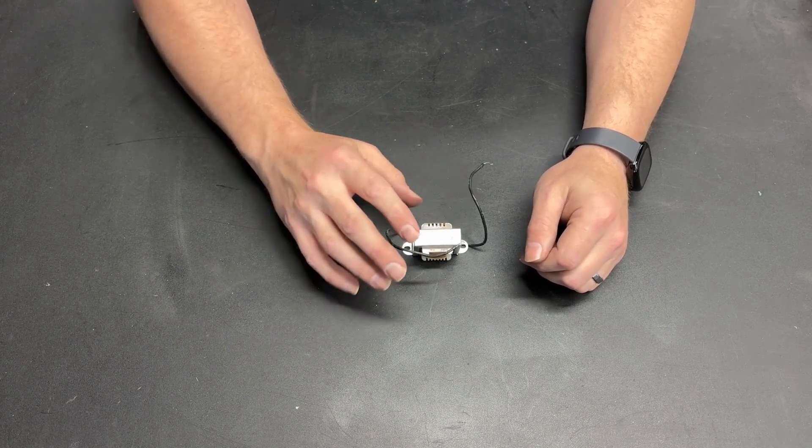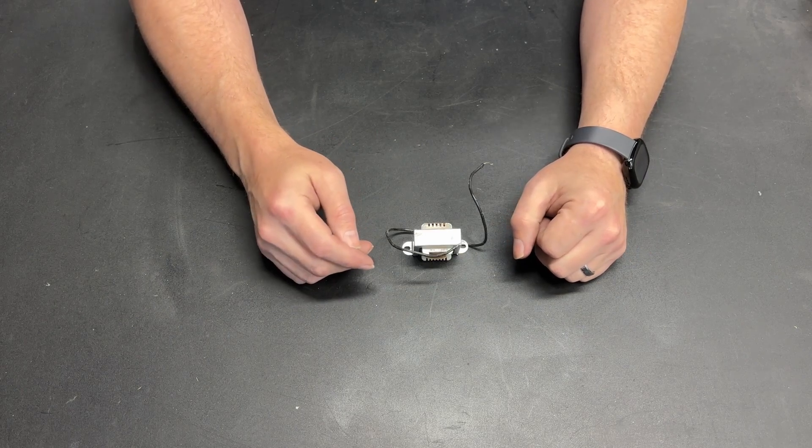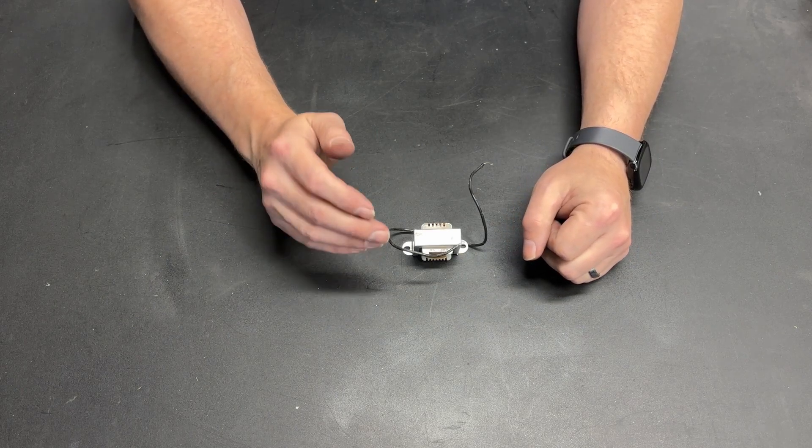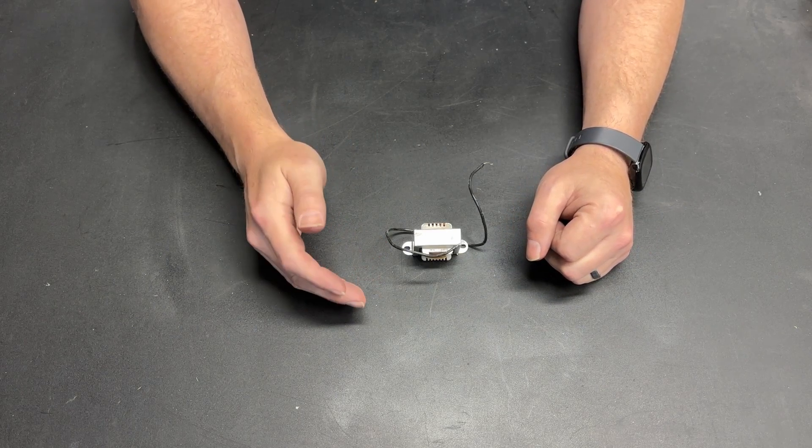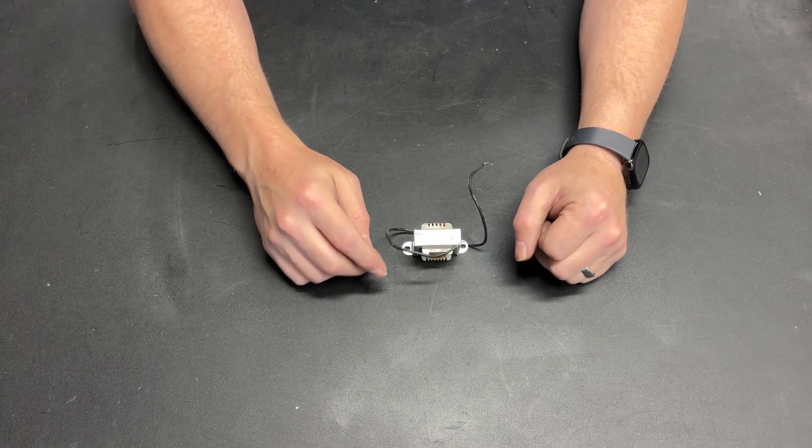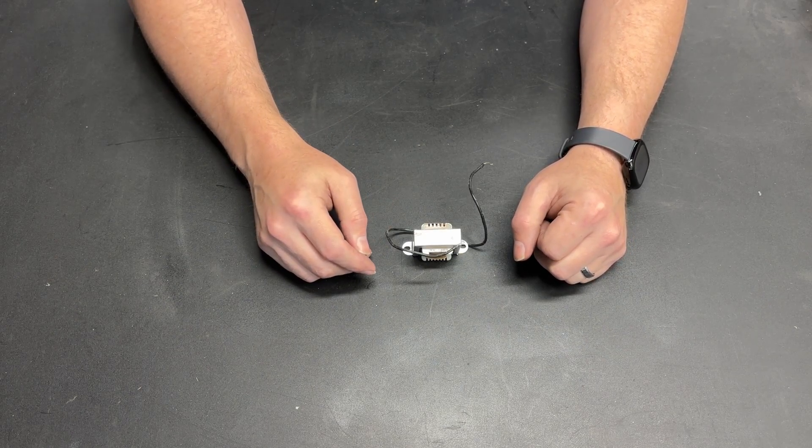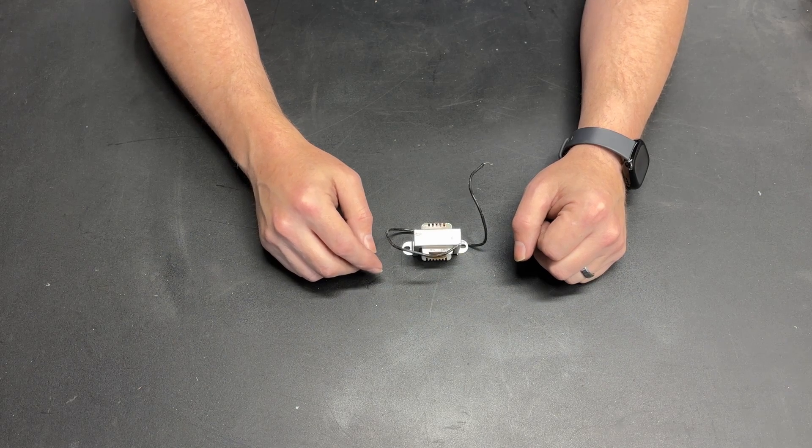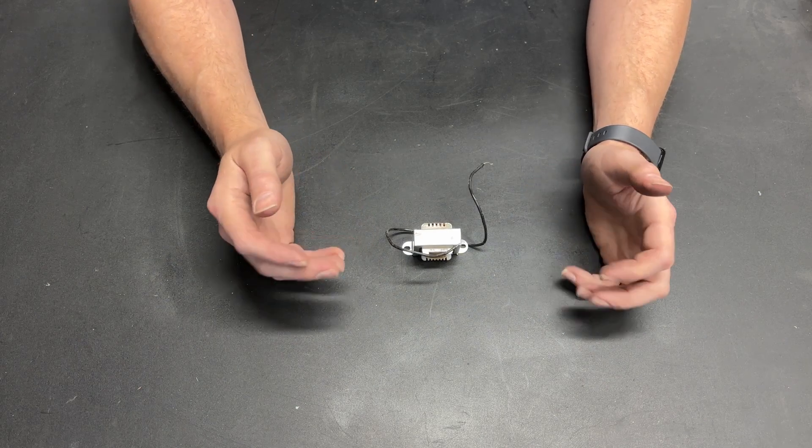So, that brings us to specifications. If you look at any catalog, any place that is selling chokes, they're going to have two specifications. The first one is Henrys, and the second one is amps or milliamps.